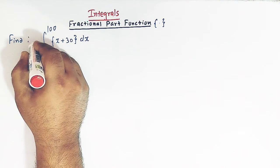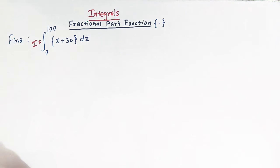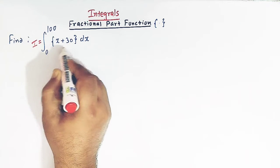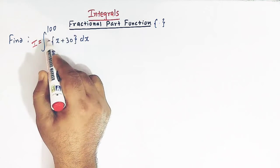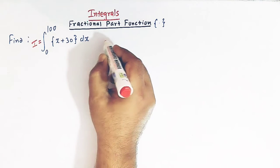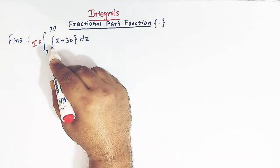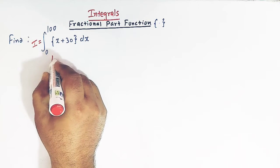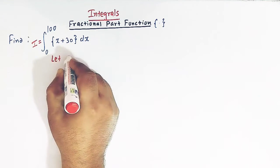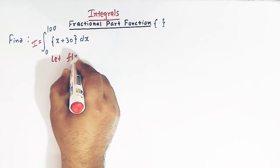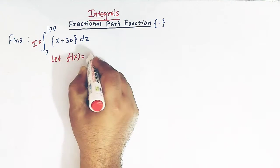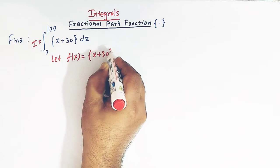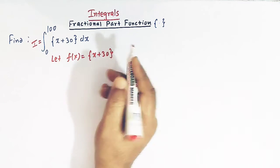Let us first call this integral as I. Our integrand is the fractional part of x plus 30. So let us take f of x as the fractional part of x plus 30.